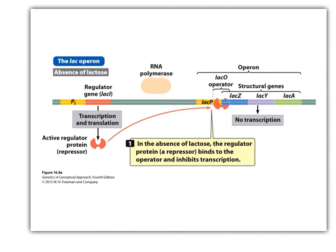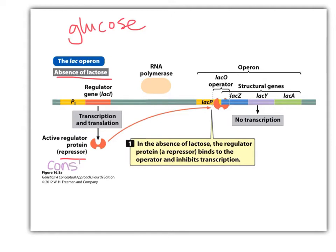Here's the lac operon in the absence of lactose. There's no lactose around; the cell is using glucose as it likes to. The lac i gene makes the repressor protein — it has its own promoter, and transcription and translation happen constitutively. So when there's no lactose around, we are always making this repressor. The repressor binds the operator, lac o. Here's the promoter; here's the operator. No transcription can happen.